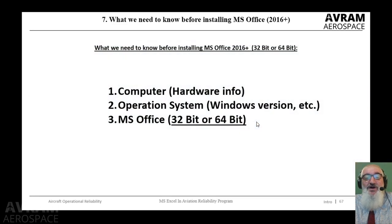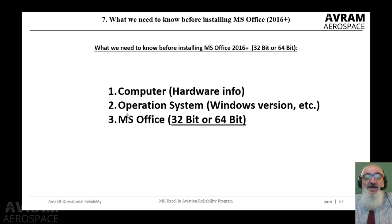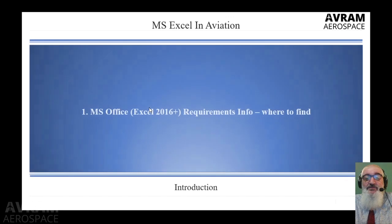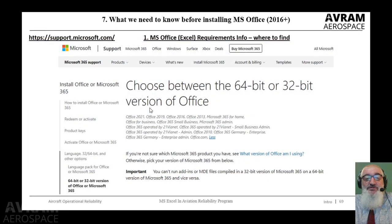Number one: we need to know our computer hardware information. Number two: we need to know the operating system — and we are talking in this video about Windows. Number three: we need to know the differences between 32-bit and 64-bit MS Excel / MS Office. Where can we find all this information? The answer is very simple: we need to go to the Microsoft website, product support section. Under product support we have 'Install MS Office or Microsoft 365'.